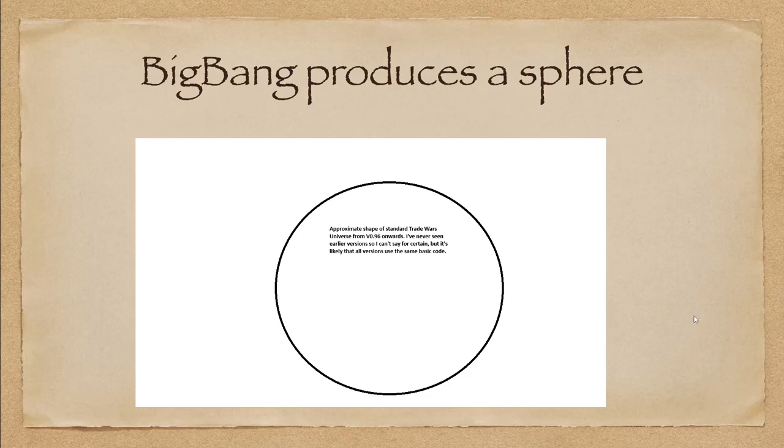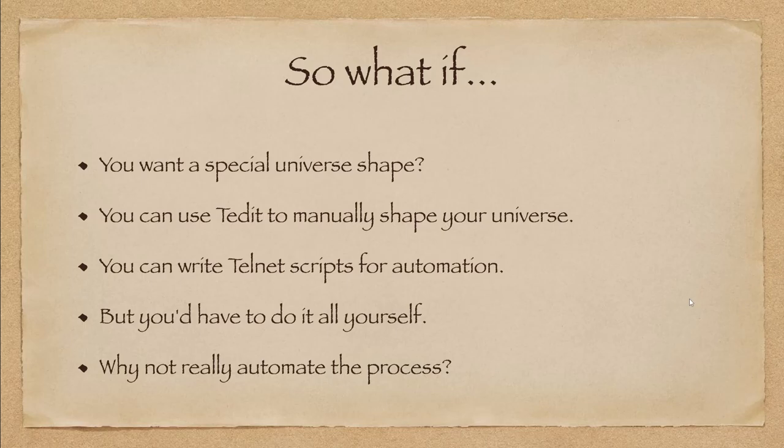So what if you want a special universe shape? You can manually edit it using T-edit, but that takes a lot of work. You can write Telnet scripts for automation, but again, that takes a lot of work. You'd have to do it all yourself. The thing is, why not automate the process? Build a program to do it so you don't have to manually write Telnet scripts. You get the program to do the work for you.